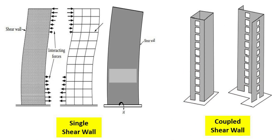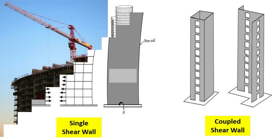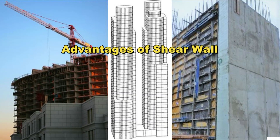Next, the single shear wall systems. Walls that are connected by floor slabs are beams with negligible bending resistance. If the walls are connected by bending members, then it is termed as coupled shear walls.